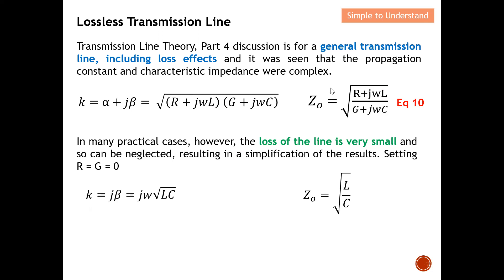For the characteristic impedance, I again set R and G equal to zero. The jω terms cancel each other, and therefore the characteristic impedance for a lossless transmission line simplifies to √(L/C).